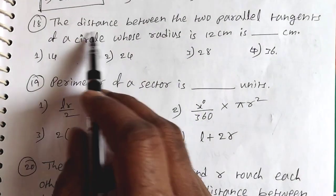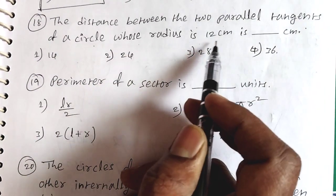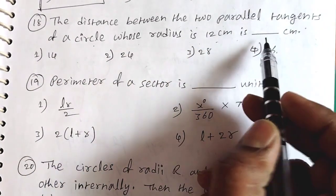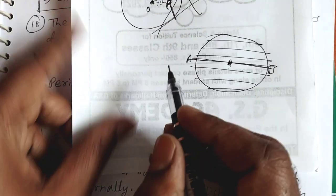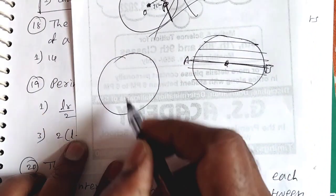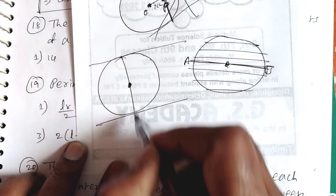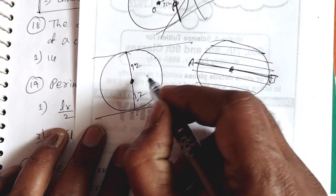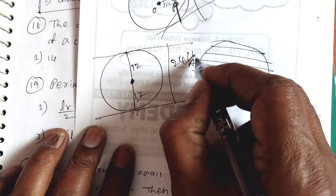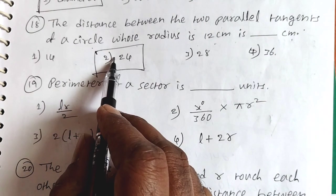Question 18: The distance between two parallel tangents of a circle whose radius is 12 cm is how many cm? The distance between two parallel tangents equals the diameter. The radius is 12 cm, so the diameter is 12 plus 12 equals 24 cm. So the answer is 24 cm, the second option.